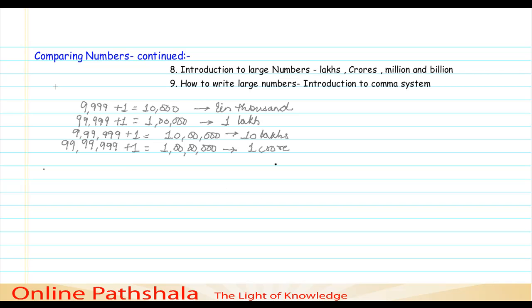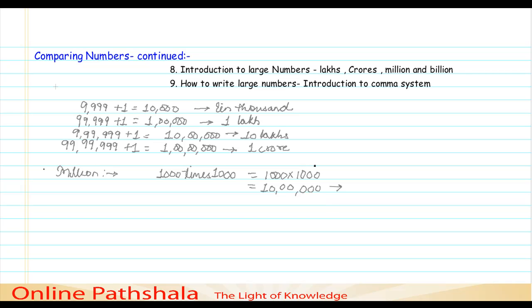Now let me tell you about the international system of numeration. Here we are talking about the million concept. One million is one thousand times one thousand, that is 1,000 into 1,000, which gives one followed by six zeros. So this number — ten lakhs — is one million in the international system of numeration.